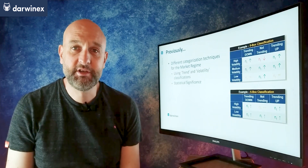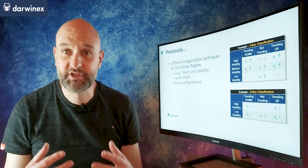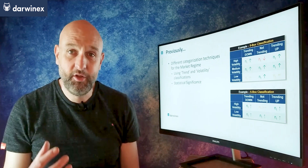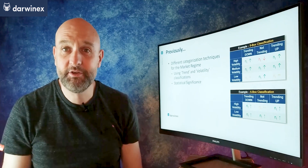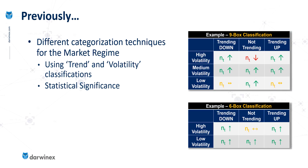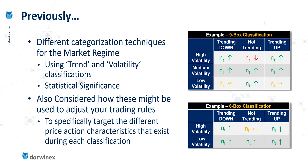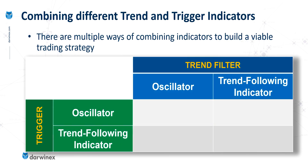We also started to consider the impact of statistical significance on that classification and what we might do to address those issues. We then went on to look at how we might adjust trading rules in order to specifically target different characteristics that exist in each of those classifications. But what we're going to move on and do now is to consider multiple ways of combining different types of indicator to build viable trading systems.